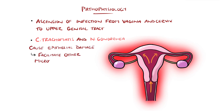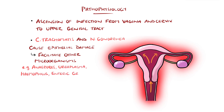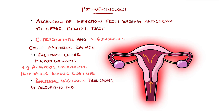which then facilitates other microorganisms to enter, such as anaerobes, Ureaplasma, Haemophilus, and enteric gram negatives. Bacterial vaginosis can also facilitate this ascent by disrupting the normal vaginal flora.